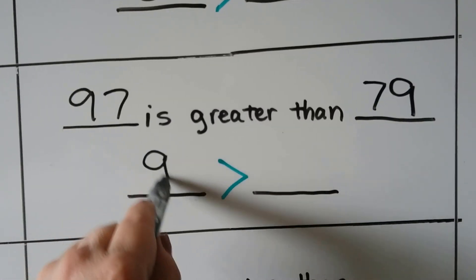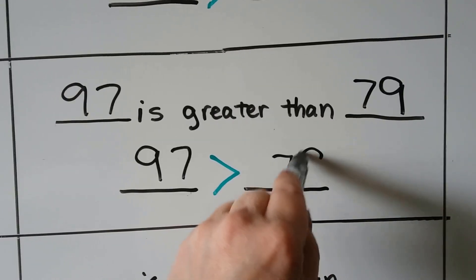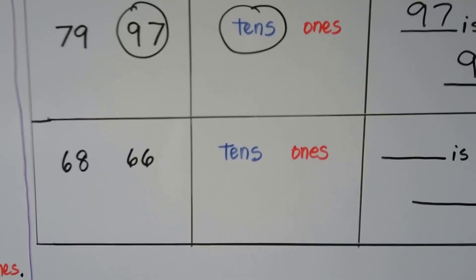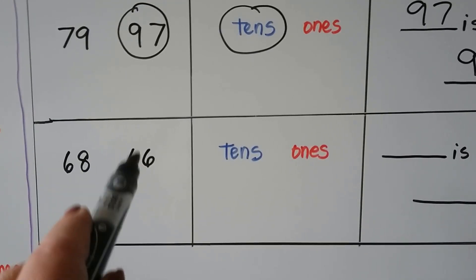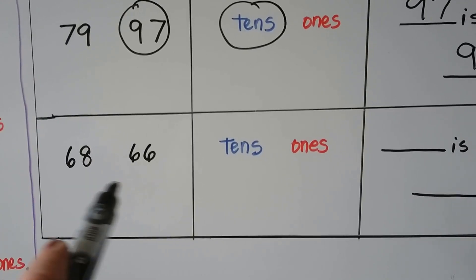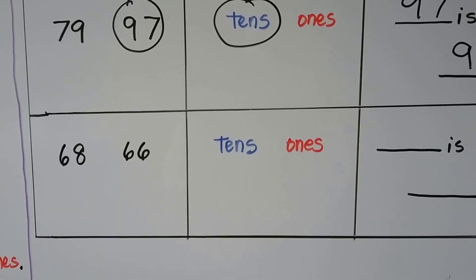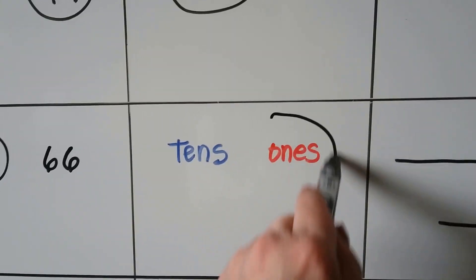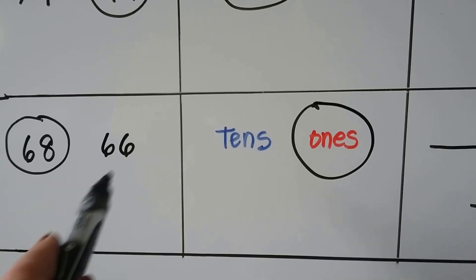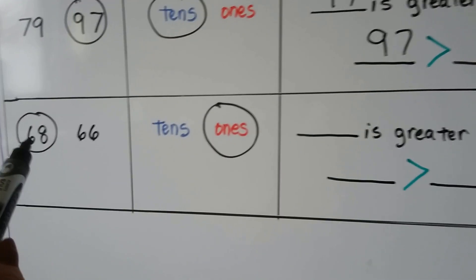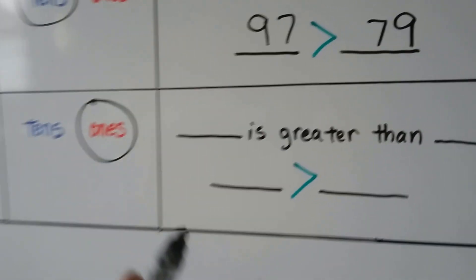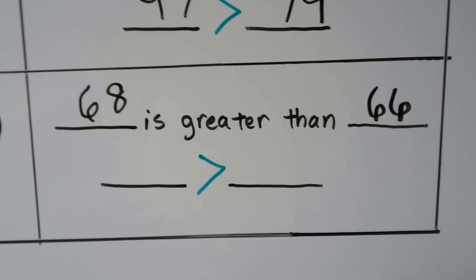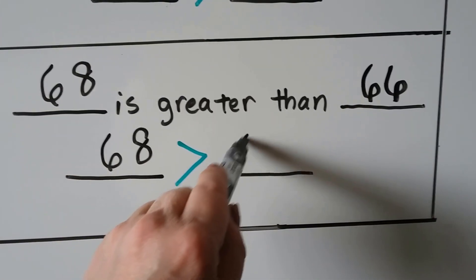We can write it with the symbol: 97 is greater than 79. Which one is greater, 68 or 66? We look at the tens place and they both have a 6. Because they both have a 6 in the tens place, we look at the ones place. This has 8 ones; this has 6 ones. 8 is larger than 6, so 68 is the larger number. The ones helped us to decide because they had the same number of tens. 68 is greater than 66.